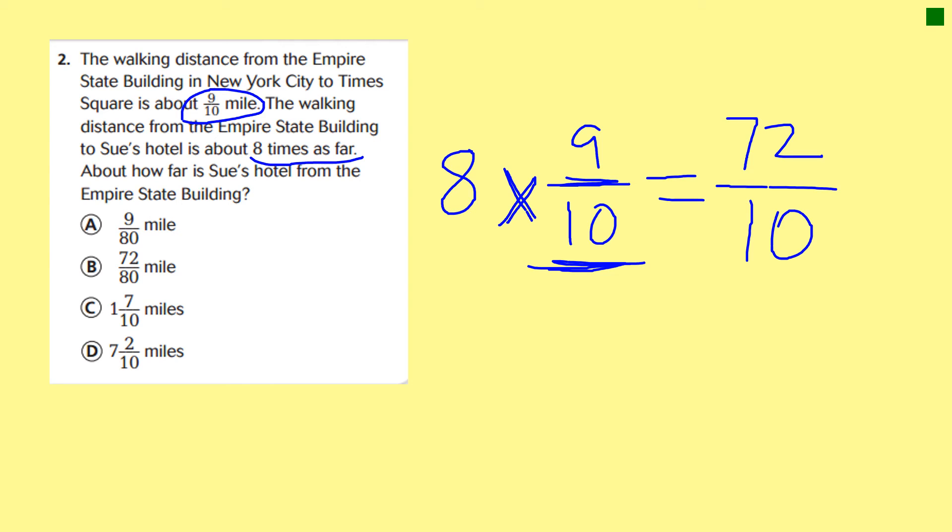I don't see 72 tenths, so they have changed 72 tenths, which is a fraction greater than one, to a mixed number. So how do you want to do that, boys and girls? You want to do multiples or division? Let's do multiples, because for every set of 10 that's going to be one whole mile.